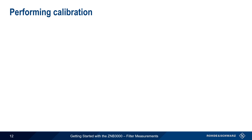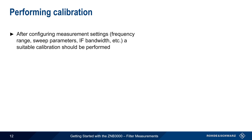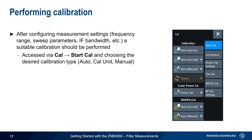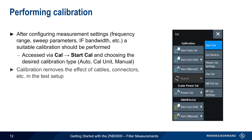The last step in making filter measurements is performing a calibration, and this should be done after configuring the measurement parameters such as frequency range, number of sweep points, IF bandwidth, etc. On the ZMB3000, calibration is configured, run, and managed via the Calibration menu, where the desired calibration type and parameters can be accessed. Calibration is important because it can be used to remove the effect of cables, connectors, etc. from the test setup, and this is needed to obtain accurate VNA measurement results, including filter measurements.